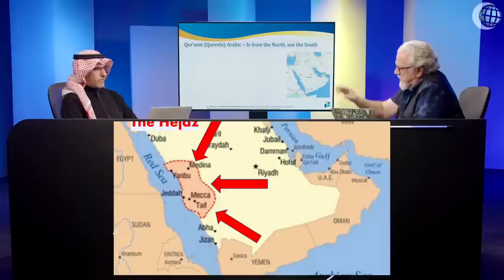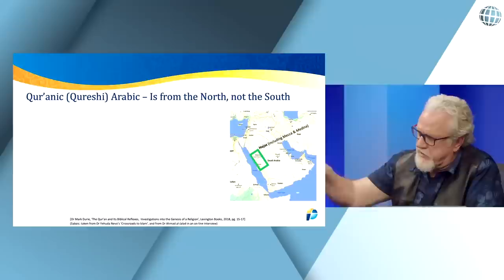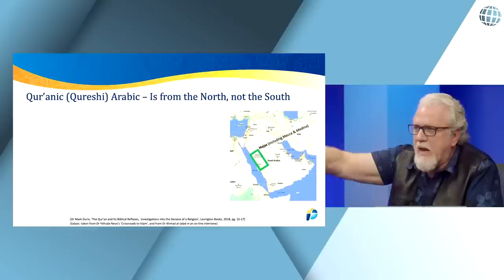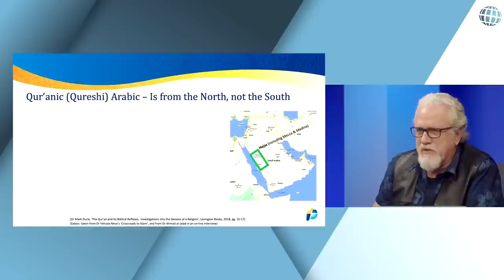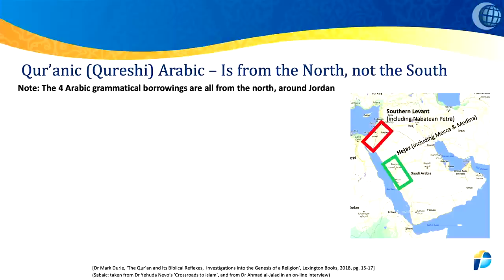I want to look at the map again. According to the standard Islamic narrative, this green rectangular area is where everything takes place — there is Medina, here is Mecca, within that western central part of Arabia. So the Quran had to have all been written here. The difficulty is, when you look at that rectangle, you'll see that there are problems. Al-Jalad brings this up, Mark Dury brings this up — when you look at the grammatical material in the Quran, they are all from the red area up here, that red rectangle.